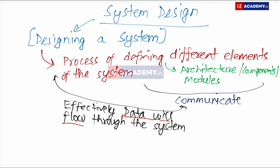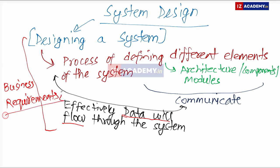And why are we designing a system? Why are we defining the process around different elements to communicate? Why are we trying to ensure that effective data flow will happen? This is all happening in order to meet business requirements. This is all being done to meet business requirements, to build a software, to build an application. It is all around the business requirement that we started working on designing the system, which is defining different elements of the system architecture, components, modules, so that they can communicate and the data can flow effectively throughout the system.